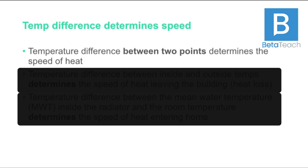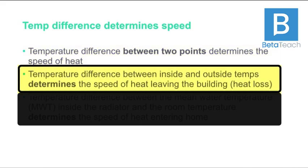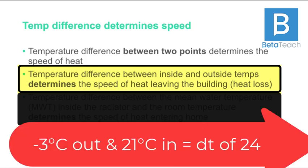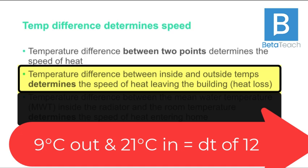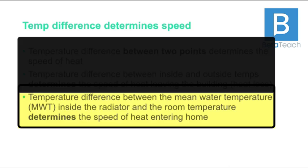Why does heat move at different speeds? What's the driving force? It's all to do with the temperature difference between two points. In the home, we tend to heat to 21 degrees, so the difference depends on what's outside. If it's minus three outside, the difference is 24. If it's nine degrees outside, the difference between 21 and nine is 12.